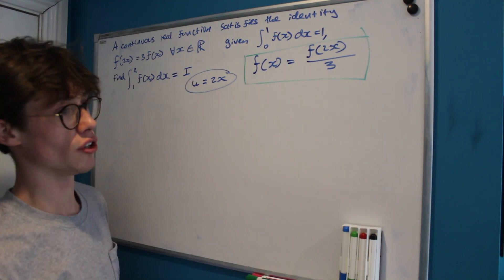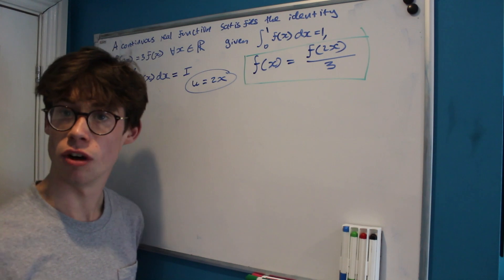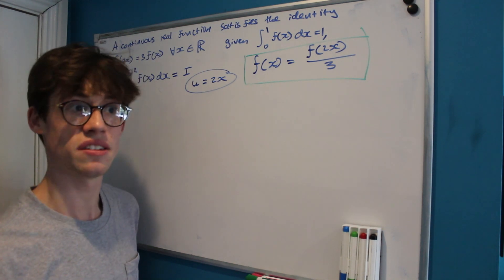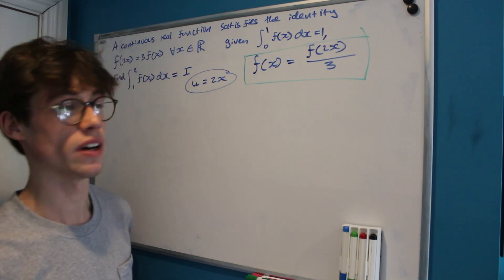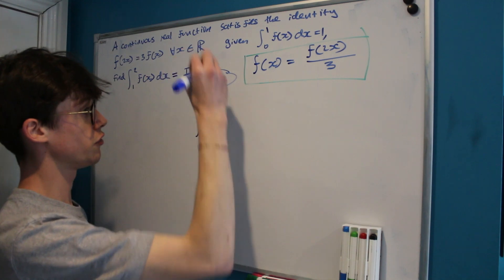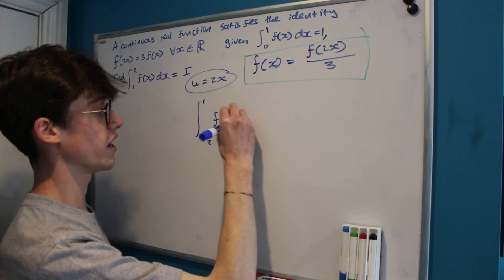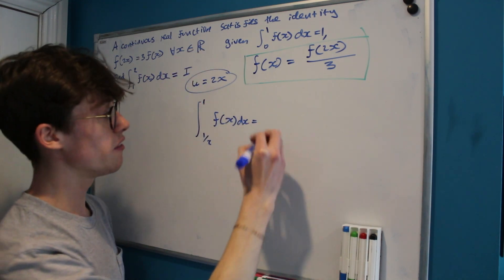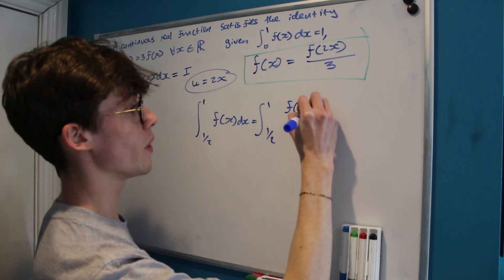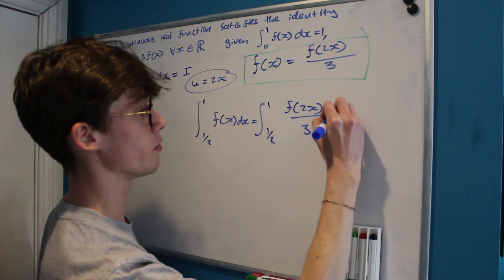Now when we do that substitution, our bounds are going to double, so I'm going to start with an integral that has the ideal bounds as half their true value. I'm going to start with the integral from a half to 1 of f(x) dx and observe that this is equal to the integral from a half to 1 of f(2x) divided by 3 with respect to x.